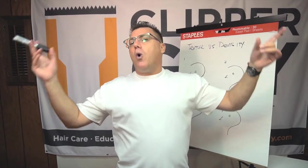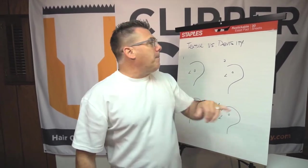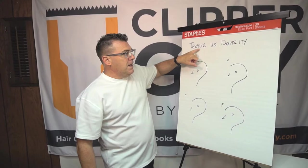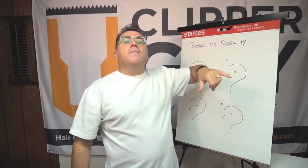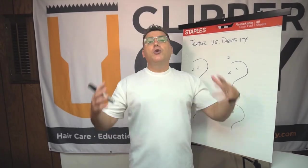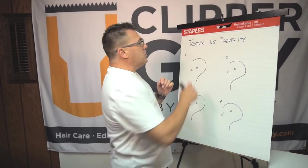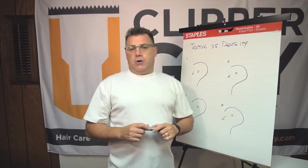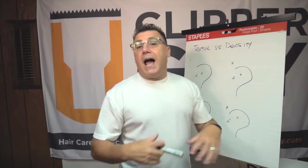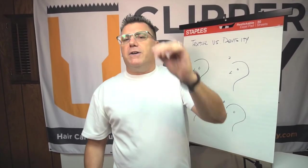So fine versus coarse is a function of the hair's thread-like property, or its texture. Density, on the other hand, is hairs per square inch — how much hair do you have? That's a very different question compared to texture. And that's where I think people who say 'I have thin hair' may mean either 'I don't have a lot of hair' or 'my individual hairs are very tiny.'